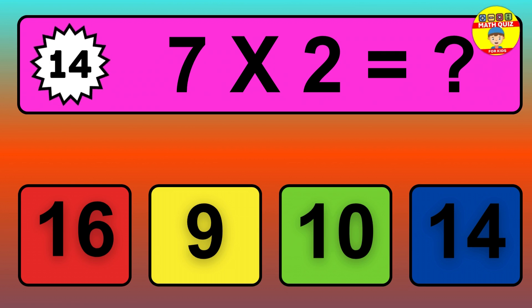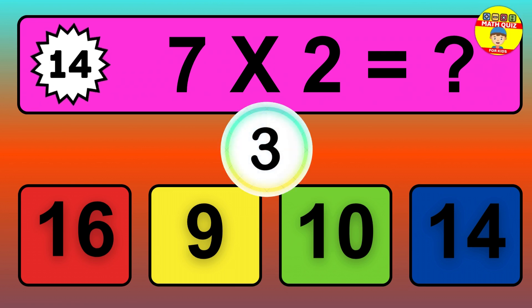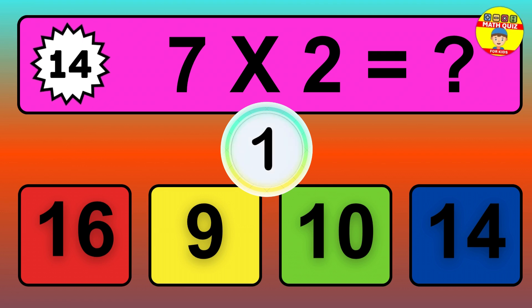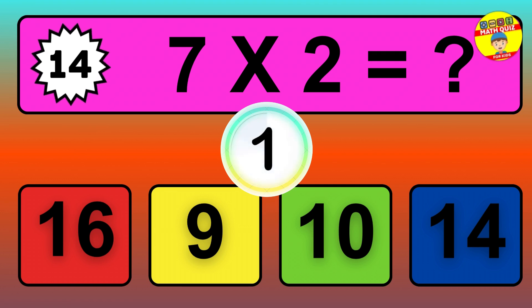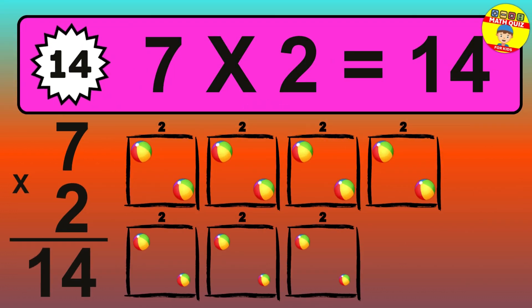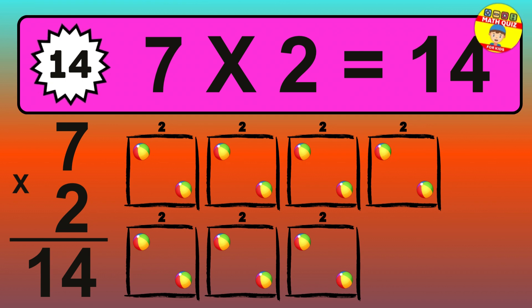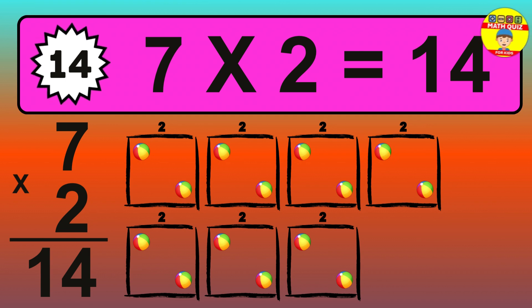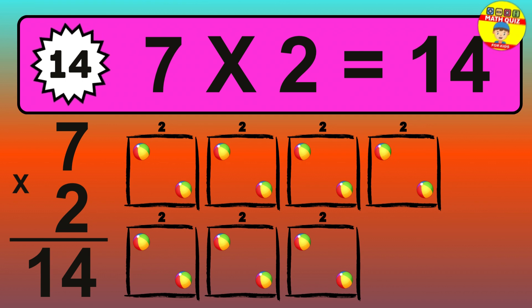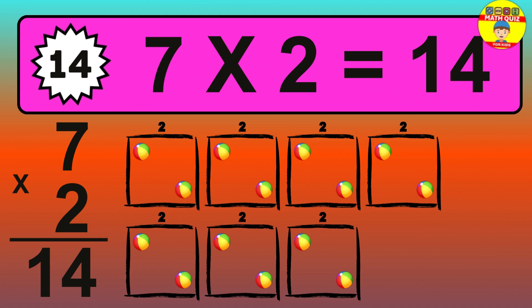Question 14. 7 times 2 equals what? The answer is 7 times 2 is 14. To calculate, we have 7 groups with 2 balls each one. So, how many balls do we have? 14 balls.